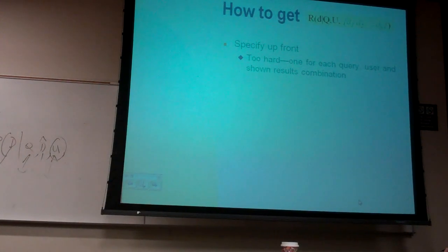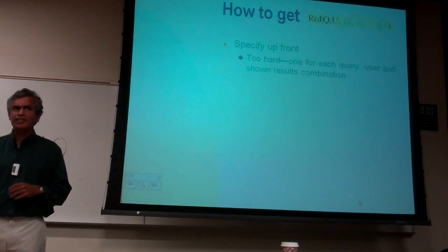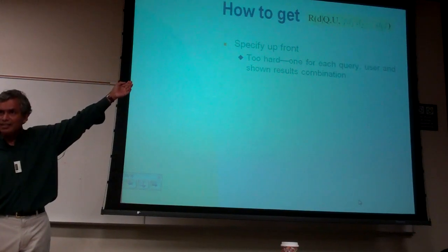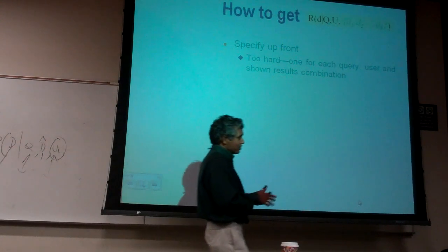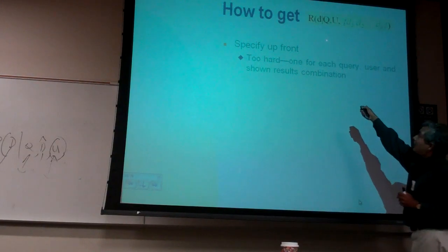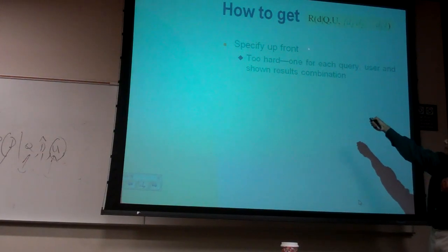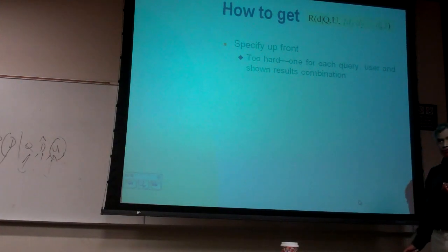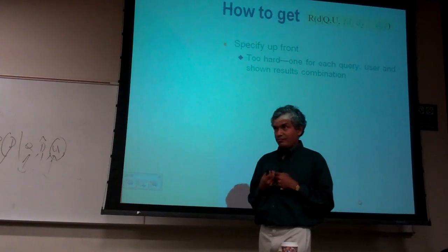I'll tell you some ways of doing relevance. One is specify relevance upfront. You can elicit these numbers. TREC results are basically eliciting results. What does TREC do? TREC actually asks random users from the media venue — here is a document, here is a query, what do you think is the relevance number? And then you can elicit this.